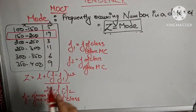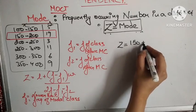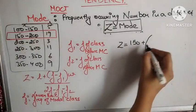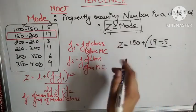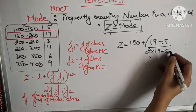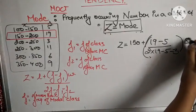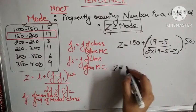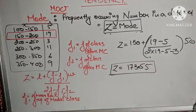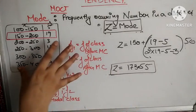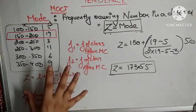The maximum frequency is 19, in the class interval 150–200, so that is the modal class. Substituting: Z = 150 + [(19 − 5) × 50] / (2×19 − 5 − 3). The width is 50 (150 − 100). Solving this gives an answer of 173.55, which is the mode of this continuous frequency table.